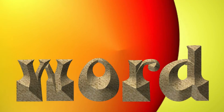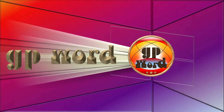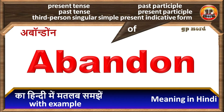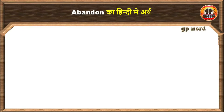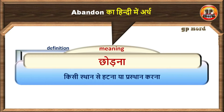GP Word. Abandon. Iska sahi Hindi arth hota hai: Chhodna. Iska matlab hai kisii sthaan se hutna ya prasthaan karna.